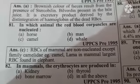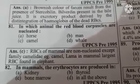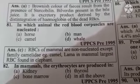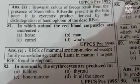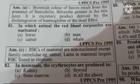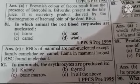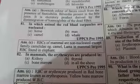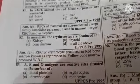Next question: in mammals, the erythrocytes are produced in — Option A: kidney, Option B: thyroid, Option C: bone marrow, Option D: all of the above. The correct answer is bone marrow. RBCs (erythrocytes) are made in red bone marrow, and yellow bone marrow produces WBCs.